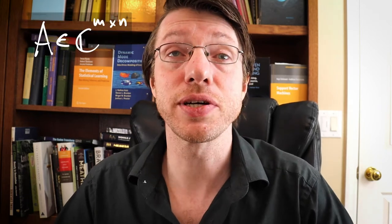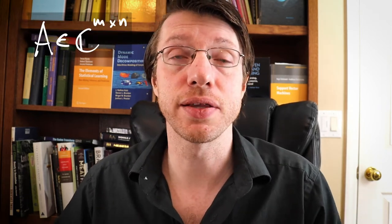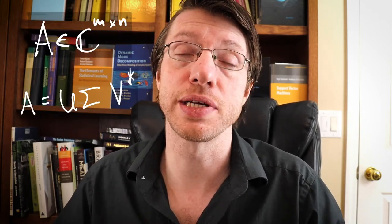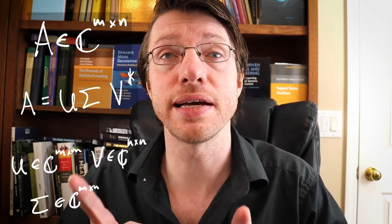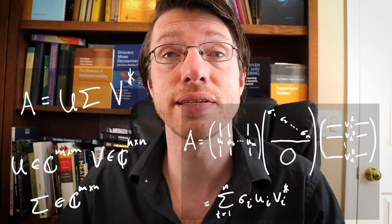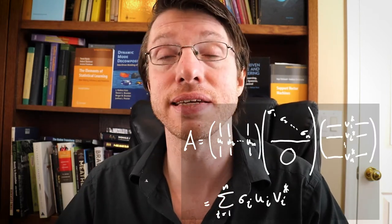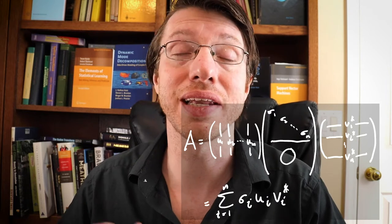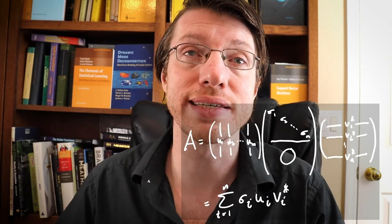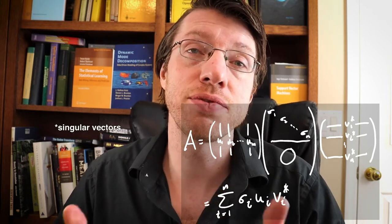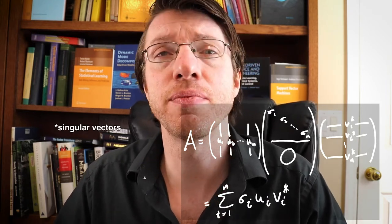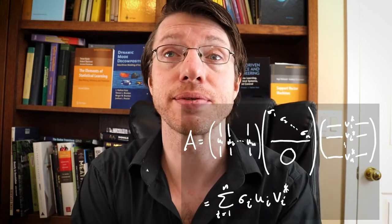Hello and welcome back. Last time we talked about the SVD, which is a way of decomposing a matrix into three different pieces: two unitary matrices and a matrix that is zero everywhere except the diagonals. This gives you what are called left and right singular values, and it gives you a data-driven basis for describing new data points.